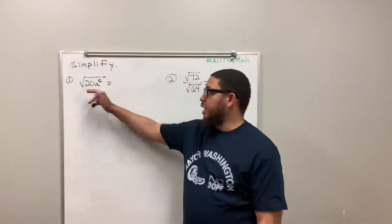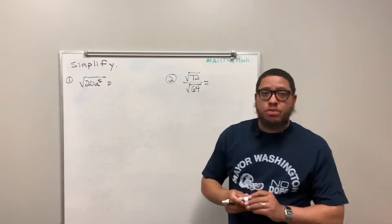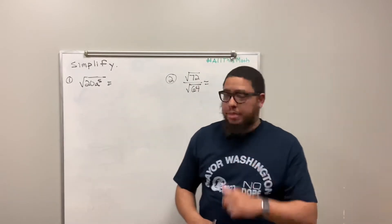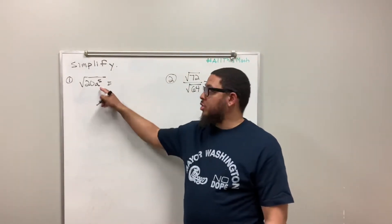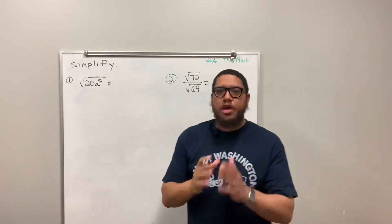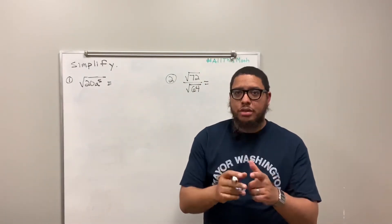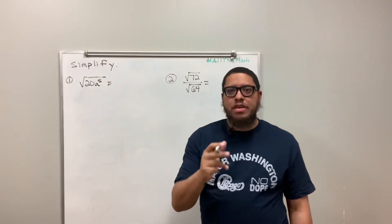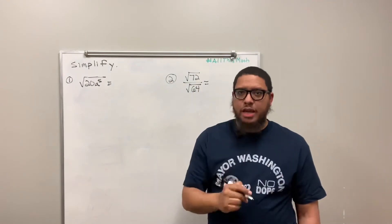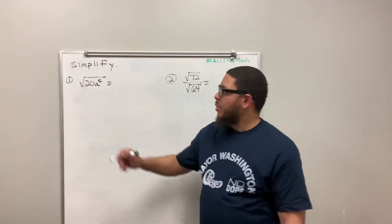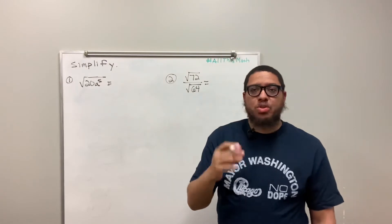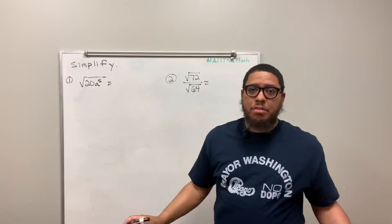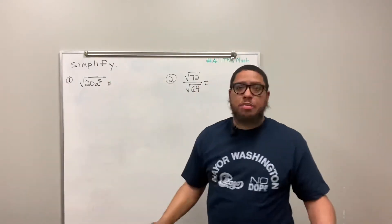So 20 is not a perfect square. Also, the variable a to the fifth is not a perfect square. When you have a variable under the radical sign, all variables are perfect squares when and only when the exponent is an even number. Since 5 is not an even number, we know that a to the fifth is not a perfect square.